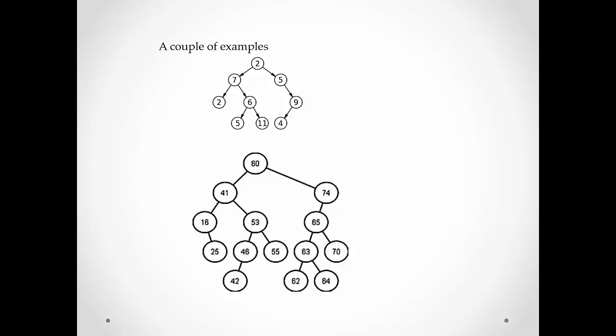7 has a left child labeled 2 and a right child labeled 6. But 6 is in turn the root of the right subtree of 7, which is in turn the root of the left subtree of 2. So this is what we mean by the nested or recursive structure of a binary tree.